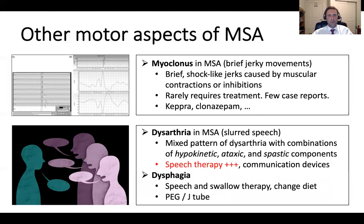Myoclonus in MSA is defined by very brief, shock-like, jerky movements caused by muscular contractions or inhibitions. It is rarely bothersome enough to require treatment. There are a few case reports of benefit from drugs such as levetiracetam (Keppra). Clonazepam or other benzodiazepines can also be beneficial, but we must be very careful about side effects including sedation and worsening gait and balance in patients with MSA.